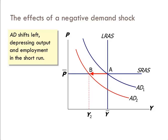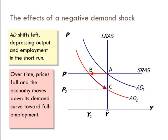In the short run, we have a decrease in output — the short run equilibrium output goes down — but price level doesn't change. In the long run, prices become unstuck, and because output is below the natural level of output, price level falls until we move back to point C, which is a new long run equilibrium.